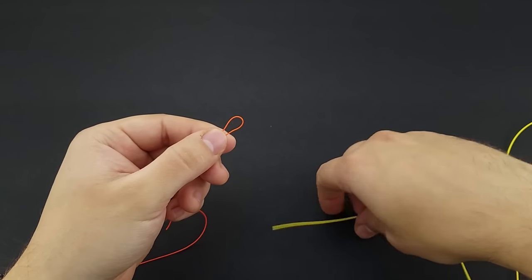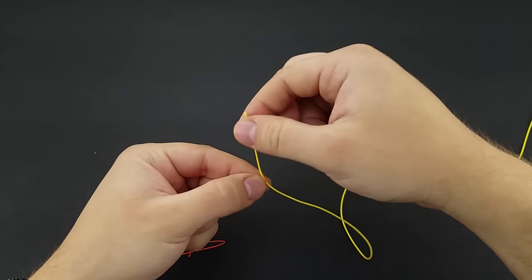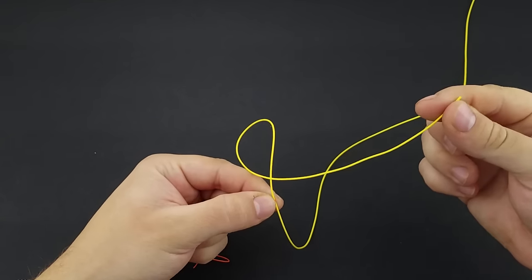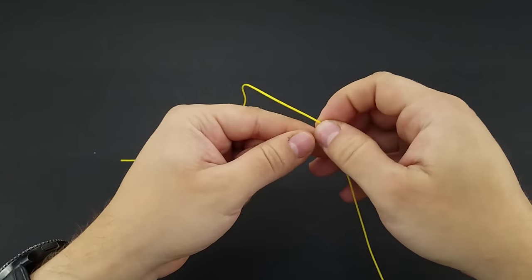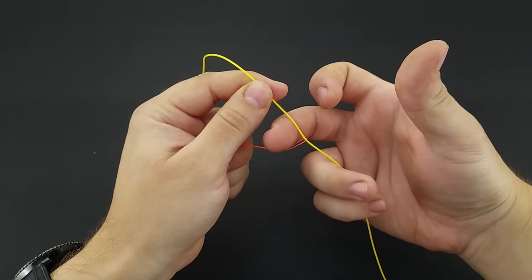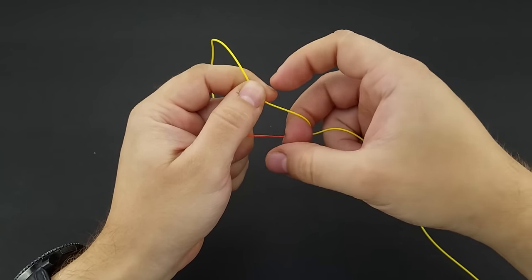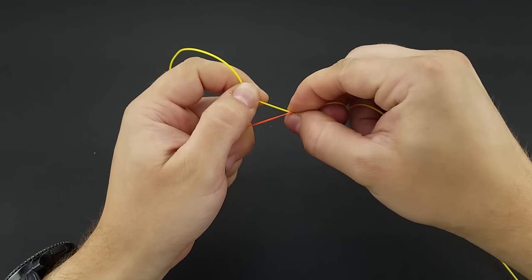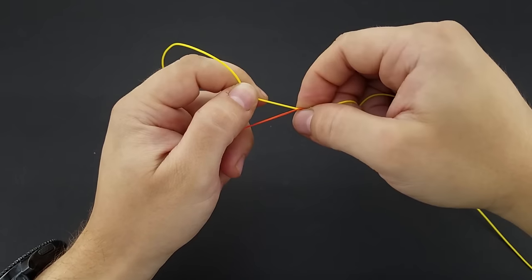Now with that loop, you're going to grab your leader line and place it up and through. I like to give myself about eight to ten inches of leader tag to work with. Now this step I like to actually put my finger through at this point and keep this loop nice and tight against the leader, and pinch and keep that loop there around your finger this entire time.